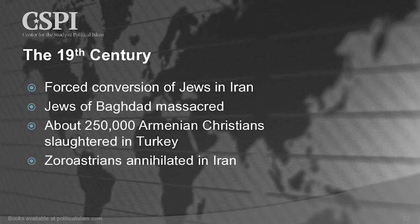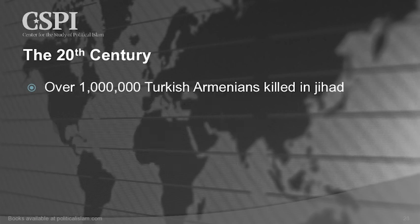In the 19th century, there are more forced conversions and massacres, and this is the beginning of a tragedy which extends into modern times: 250,000 Armenian Christians are slaughtered in Turkey. The Zoroastrian religion is now completely annihilated. Then in the 20th century, one million Armenians die.